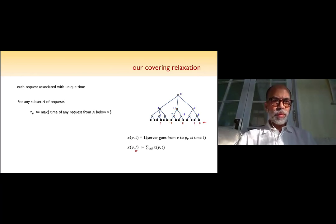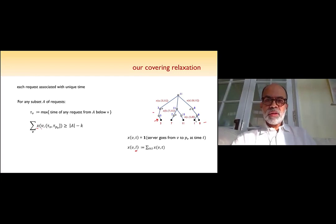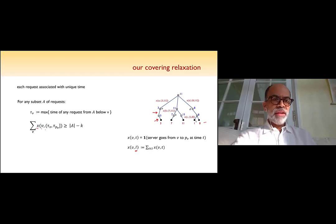So more or less, my goal is to give you the covering relaxation. Hopefully you'll understand it. And I'll give you a very impressionistic sketch. There's only so much one can do in 30 minutes of what the algorithm is doing. Okay. So here's the relaxation. Let's just assume that every request is associated with a unique time, a unique integer. I'm going to have variables x_{v,t}, which in your mind, you should think of as an indicator that the server goes from a vertex v, some vertex v, to its parent. So it goes up at some time t.